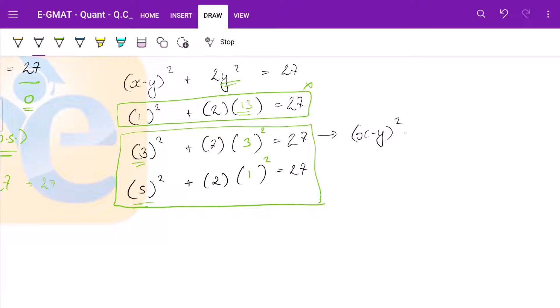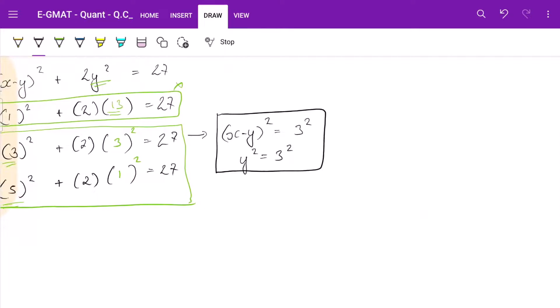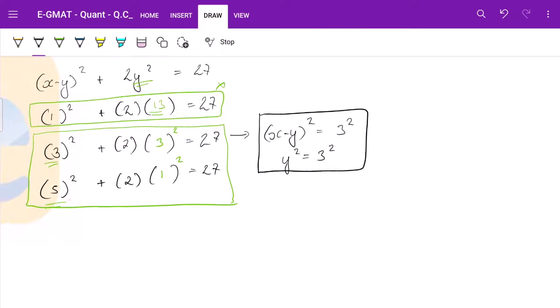So what we are saying here that (x - y)² = 3² and y² = 3². These are the two equations we have. Now if you go and try to solve this question, it will take a lot much time because you have to solve for all the cases. Y would be plus minus 3 and everything. Also, here from this one, what do we have here? We have (x - y)² = 5² and we have y² = 1². What to do now?